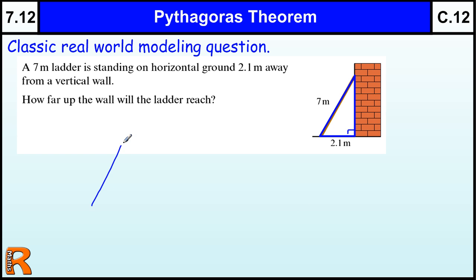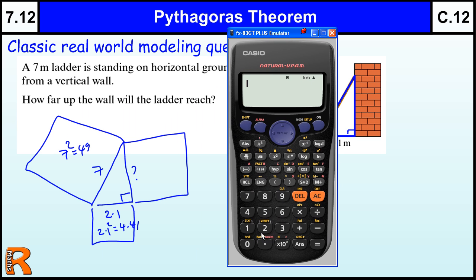Sometimes it helps just to draw it out separately. So we've got 2.1 and 7, and this is our missing side. So using the squares idea, if I draw the big square and the two smaller squares, 7 squared is 49. 2.1 squared, I think that's 4.41, just check that. 2.1 squared, 4.41, yep.